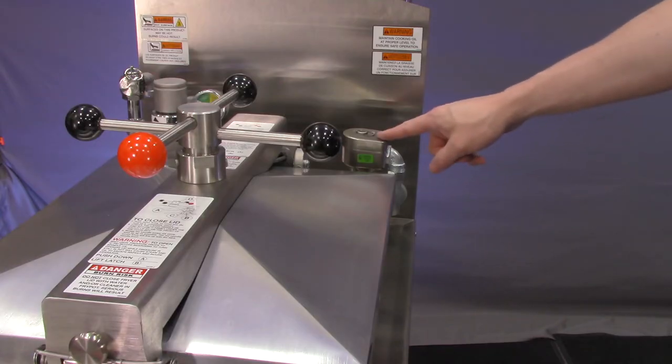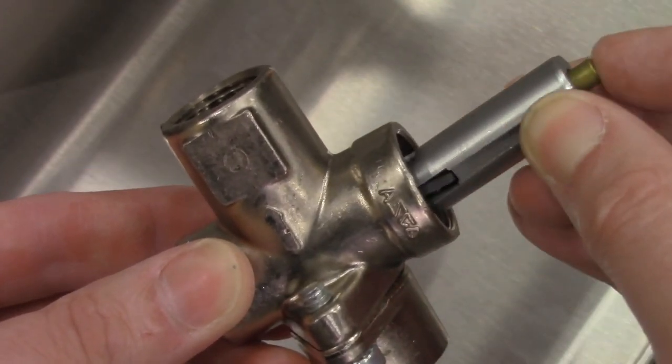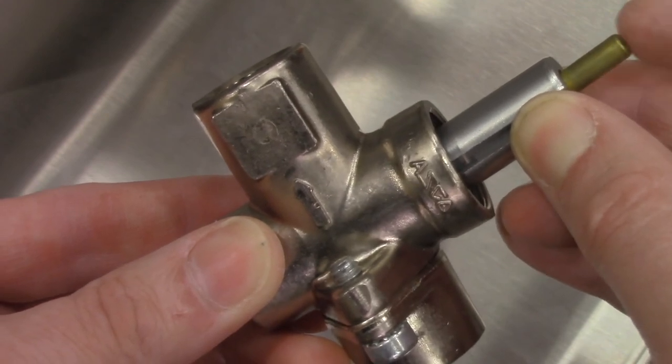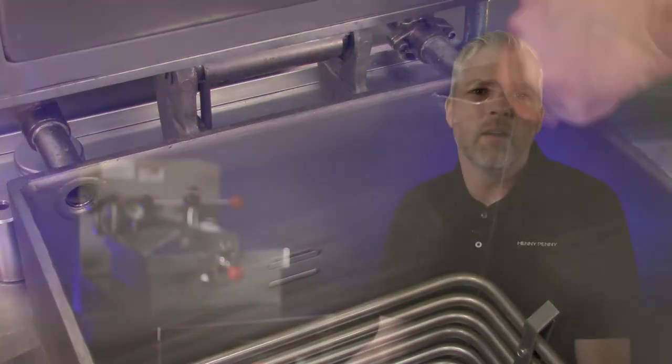To recap, for service calls where there is a fryer with slow-to-release pressure, the issue is always either with the pressure solenoid or pressure solenoid plumbing. Make sure the pressure solenoid is clean and working smoothly and remove any obstruction from the pressure solenoid plumbing from the fry vat all the way back to the steam exhaust stack.